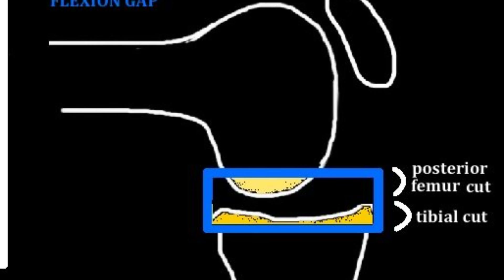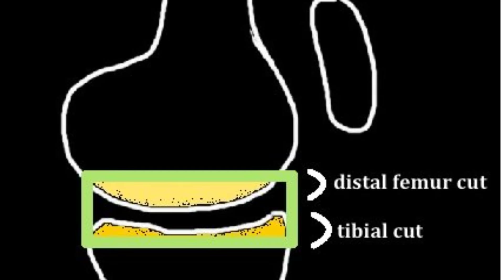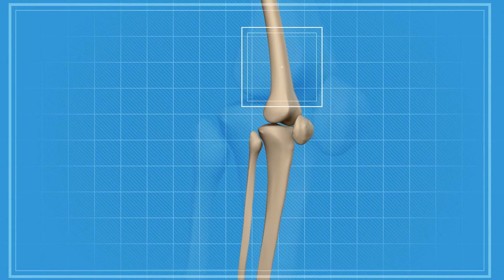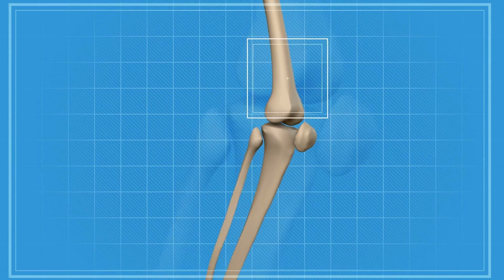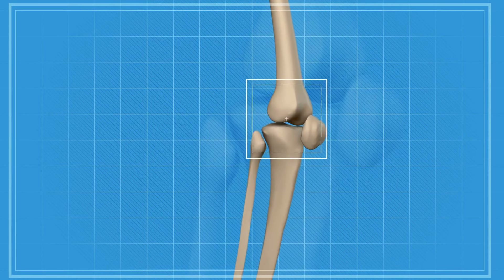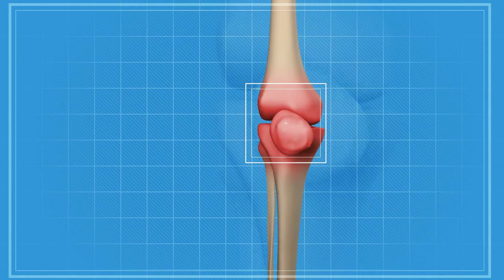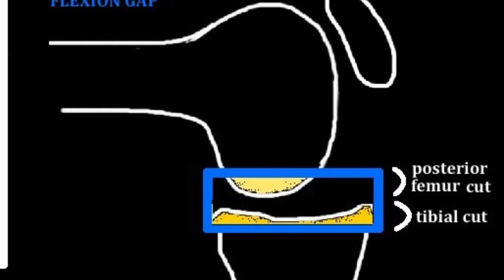It is also important to establish proper rotation of the tibial component. A good landmark for rotation is to align the anterior aspect of the tibial component with the medial one-third of the patellar tendon. If the tibial component is internally rotated, the tibia bone is now relatively externally rotated compared to the femur, which rotates the tibial tubercle laterally, increasing the Q angle and increasing the risk for dislocation.